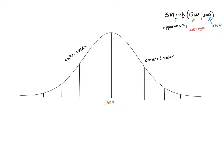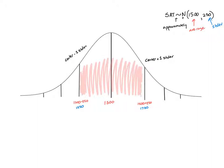So I take 1500 and add 250, giving 1750, and take 1500 minus 250, giving 1250. What this tells me — because the SAT is standardized and designed to have a normal distribution — is that 68% of all test takers will score between 1250 and 1750. So I've got 68% in the center there.